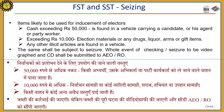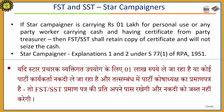Seizure guidelines: Items likely to be used for inducement of electors shall be seized. Cash exceeding Rs. 50,000 found in a vehicle carrying a candidate, his agent, or party worker; any election-related material like drugs, liquor, arms, or gift items exceeding a total of Rs. 10,000; or any other illicit articles found in a vehicle shall be subject to seizure. The whole event of checking and seizure shall be videographed and the CD submitted to the assistant expenditure observer or RO. If a star campaigner is carrying Rs. 10,00,000 for personal use, or any party worker is carrying cash with a certificate from the party treasurer, then FST and SST shall retain a copy of the certificate and will not seize the cash.